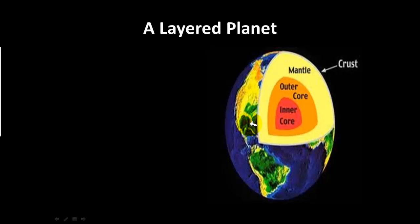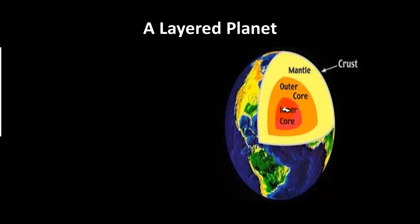This next graphic is probably just a review from middle school or even elementary school — the Earth is made of three different layers. We live on the top layer, which is the crust. Right underneath the crust is the mantle, and inside the mantle is the inner and outer core, made of lava and hot material.